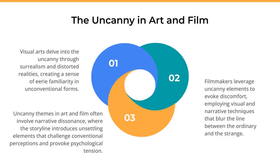The Uncanny in Art and Film: visual arts delve into the uncanny through surrealism and distorted realities, creating a sense of eerie familiarity in unconventional forms. Filmmakers leverage uncanny elements to evoke discomfort, employing visual and narrative techniques that blur the line between the ordinary and the strange. Uncanny themes in art and film often involve narrative dissonance, where the storyline introduces unsettling elements that challenge conventional perceptions and provoke psychological tension.